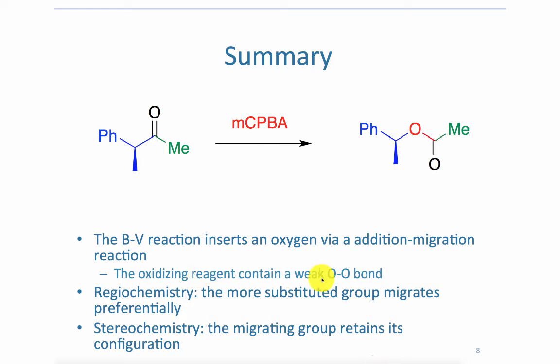The reason this works is because the oxidizing reagent contains a weak oxygen-oxygen bond that breaks easily. In terms of regiochemistry, the more substituted group migrates preferentially because that group can better stabilize the partial positive charge created in the transition state.